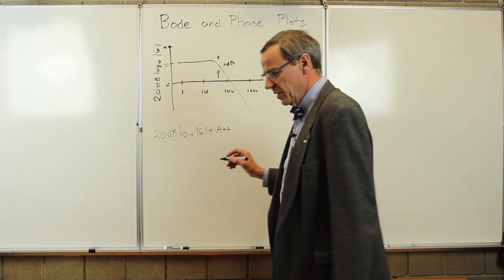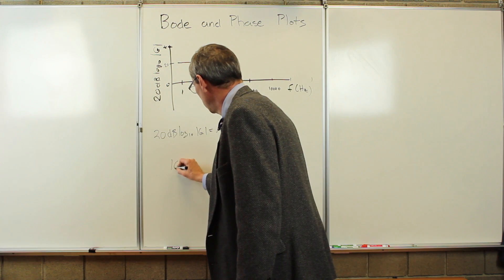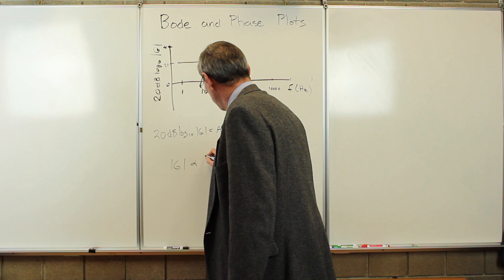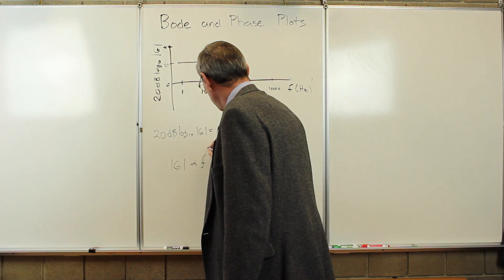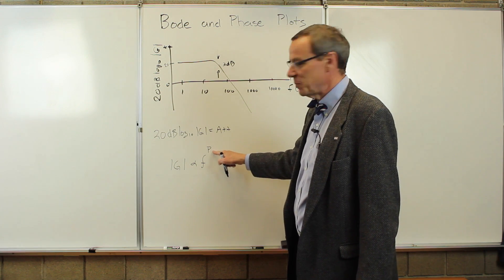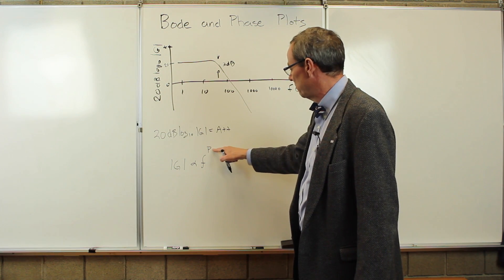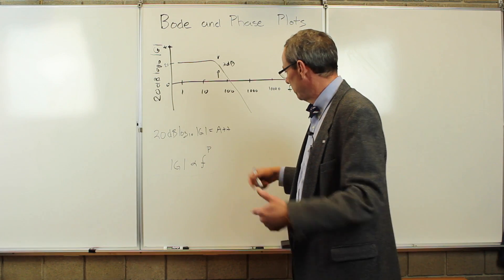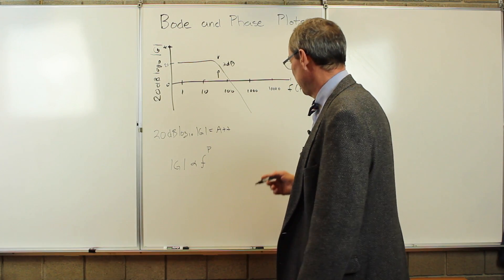One more thing we can do is we can look at the slope of this thing. Let's say it's falling off with some linear slope and ask, what does that mean exactly? So let's just assume that the gain is proportional to the frequency to some power p. So it could be power first power, it could be proportional to the frequency, the frequency squared, one over the frequency, one over the frequency squared, but it looks something like that.